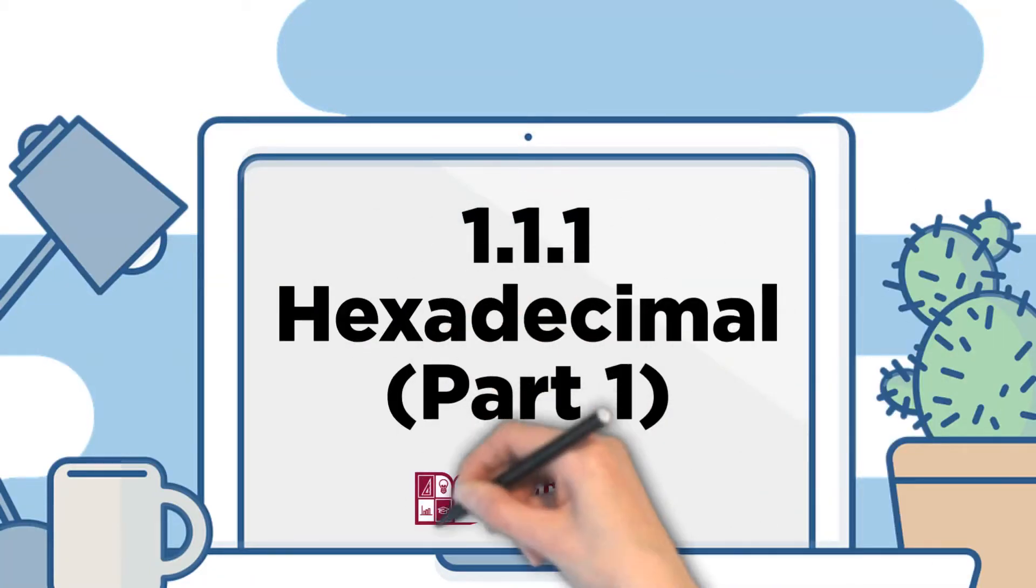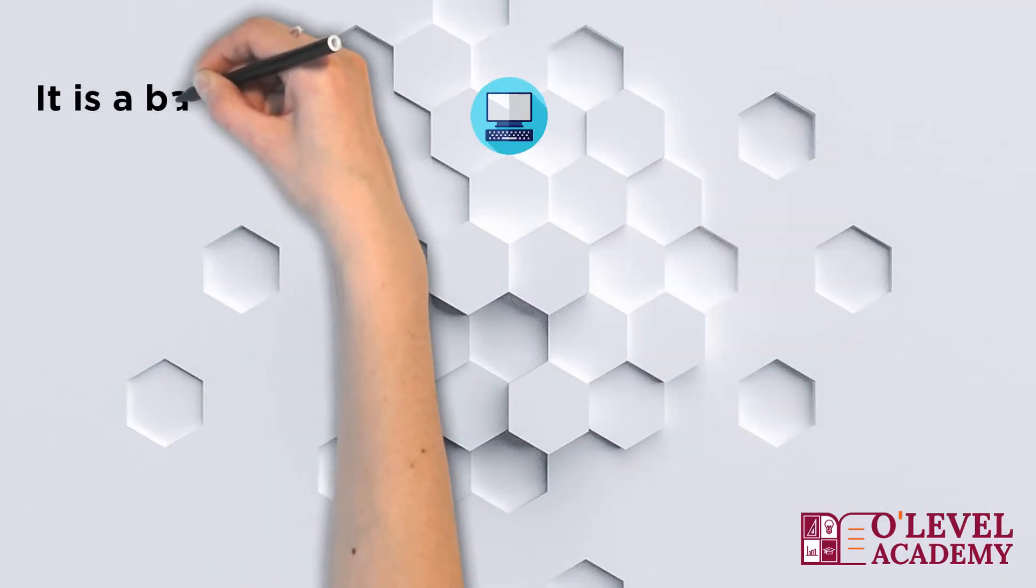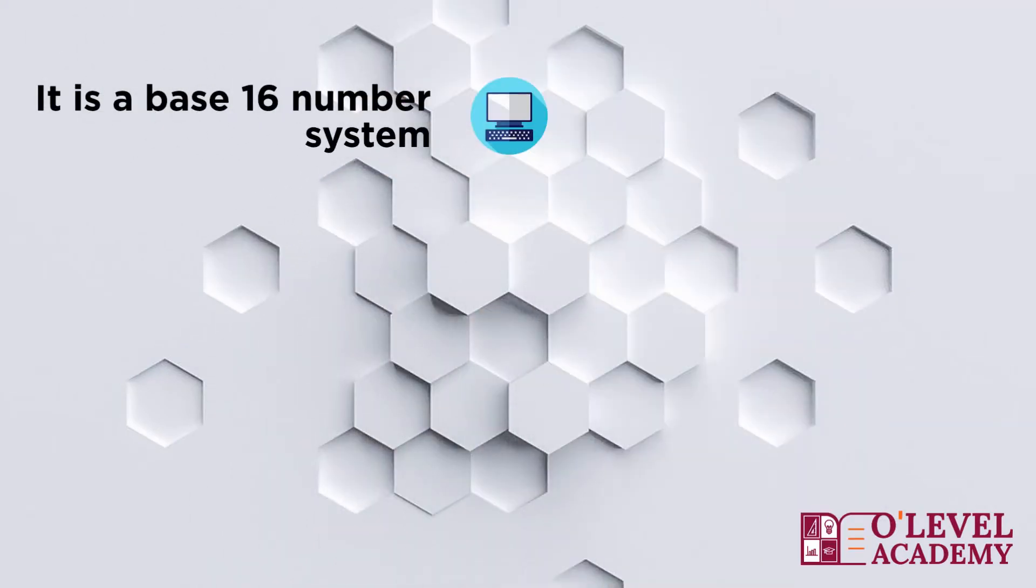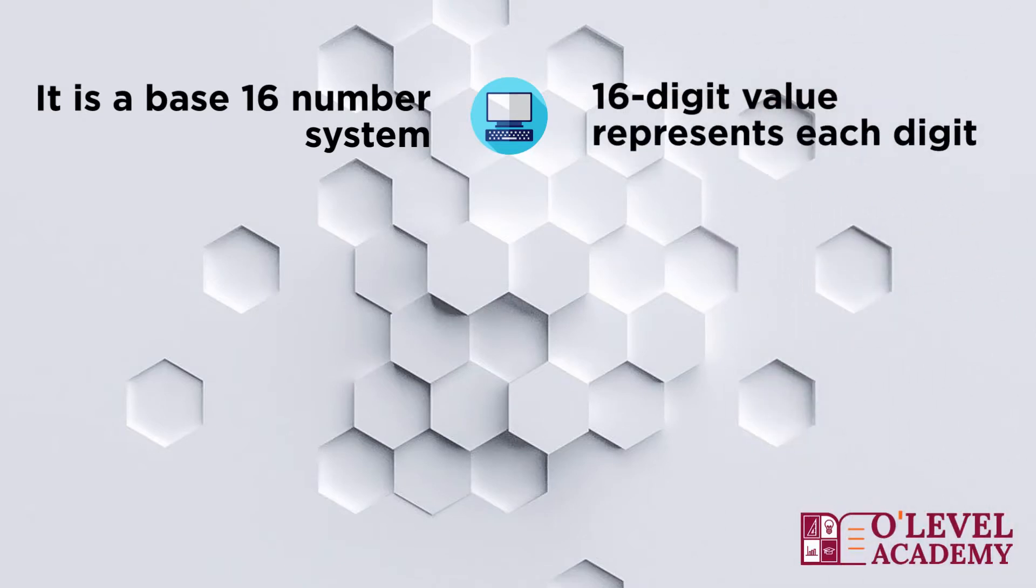Hexadecimal Part 1. It is commonly known as hex system. It is a base 16 number system. It uses 16 digit values to represent each digit.